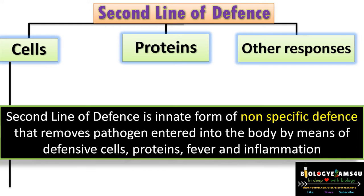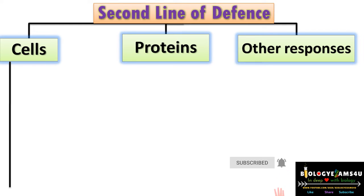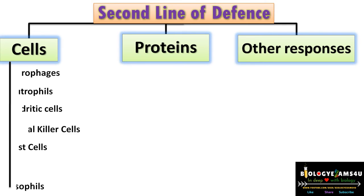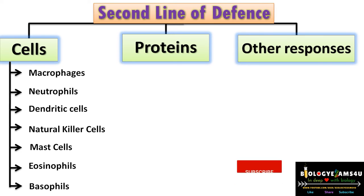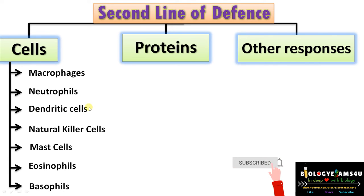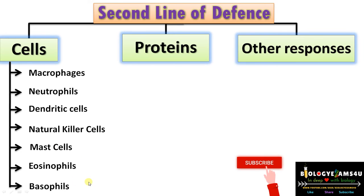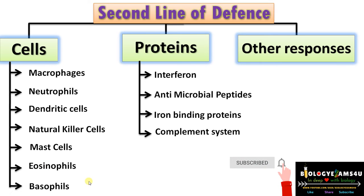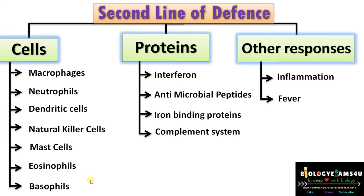Let's have a quick summary of the second line of defense. The defensive cells involved are macrophages, neutrophils, and dendritic cells — these three form the professional phagocytes. Then there are natural killer cells, and mast cells, eosinophils, and basophils, which mediate allergic responses. The proteins involved are interferons, antimicrobial peptides, iron-binding proteins, and the complement system. Other coordinated responses include inflammation and fever to remove pathogens from the system.